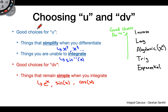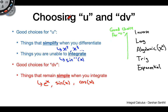That's the framework for deciding u or dv. There's also a shortcut called ILATE — Inverse, Log, Algebraic, Trig, Exponential. Further up the list, the better the choice for u; lower down, the better choice for dv. But this is just a shortcut — don't memorize it and try to fit it to every problem. Focus on the underlying logic we've talked about, as that'll serve you better in the long run.